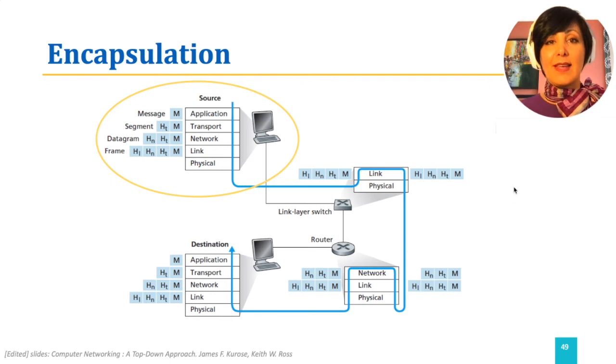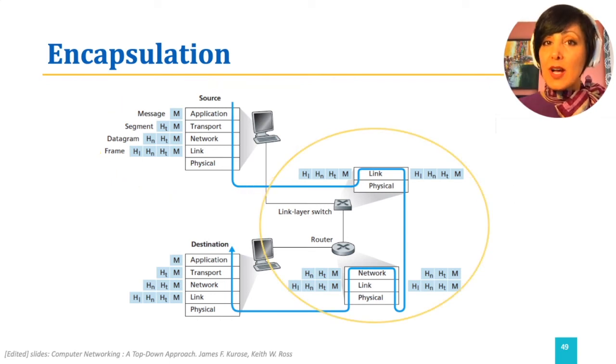If the node on the way is a link layer switch, only the link layer header of the frame will be analyzed for it to receive the link layer services of forwarding before it continues to its destination.